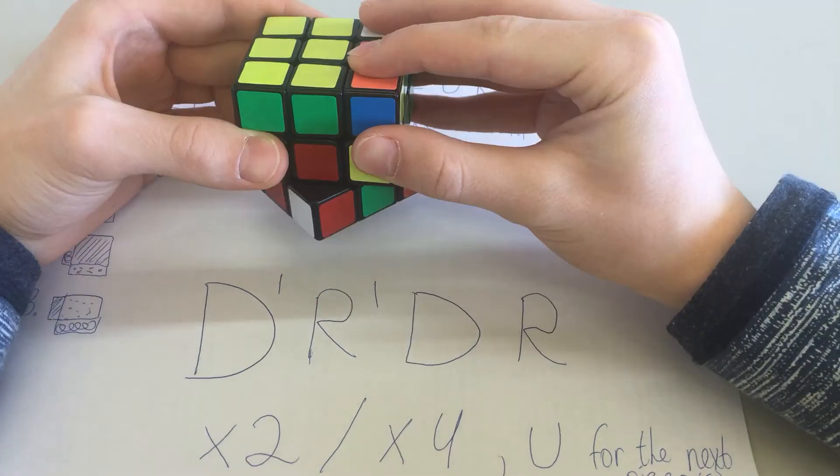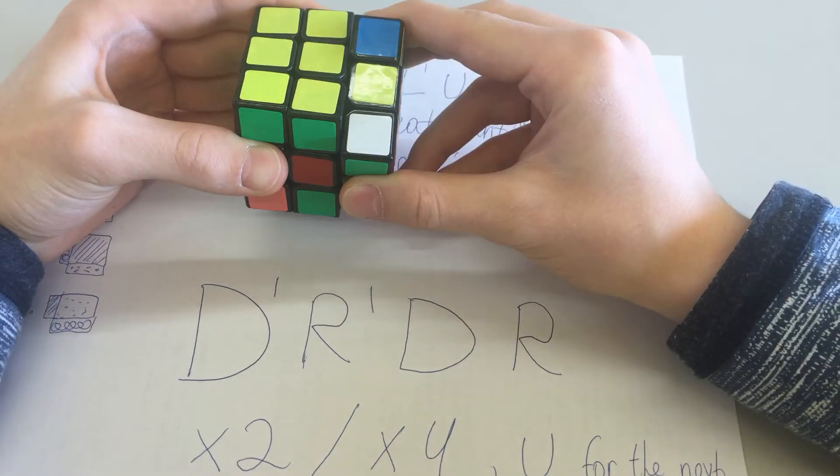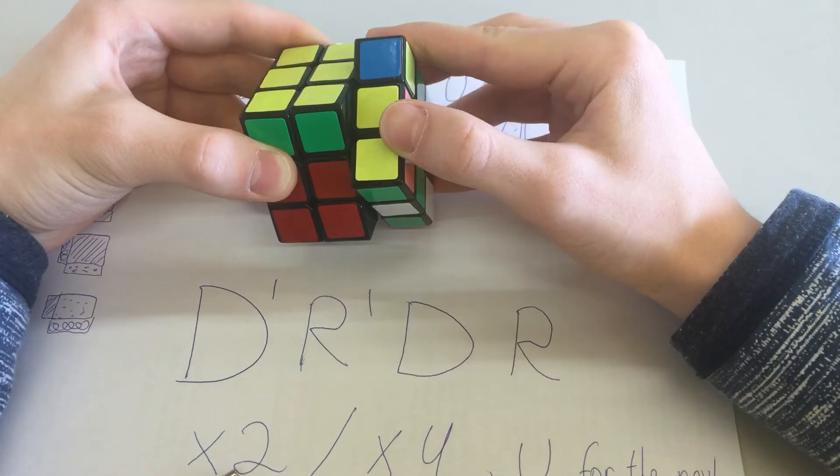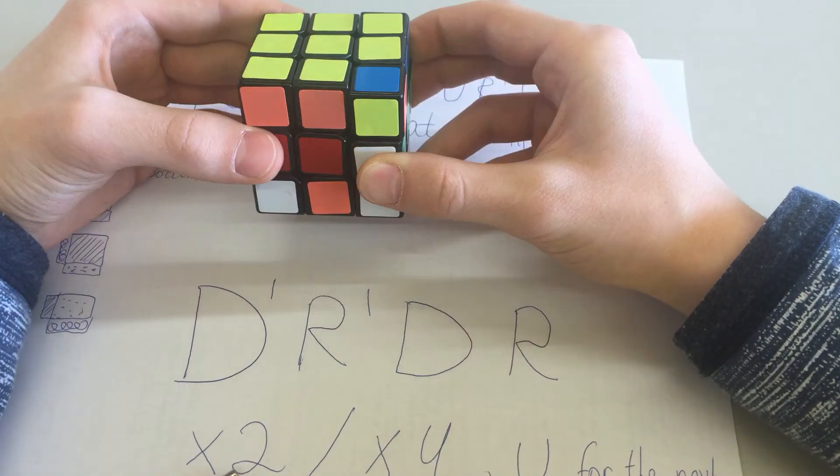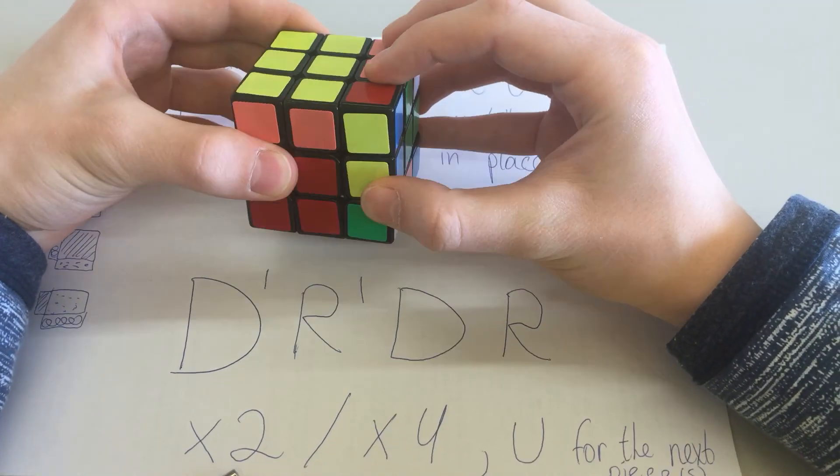The cube looks ruined, but don't worry, just move to the next piece with U movement and keep doing it until all four corners are facing yellow. The rest is self-comprehensive.